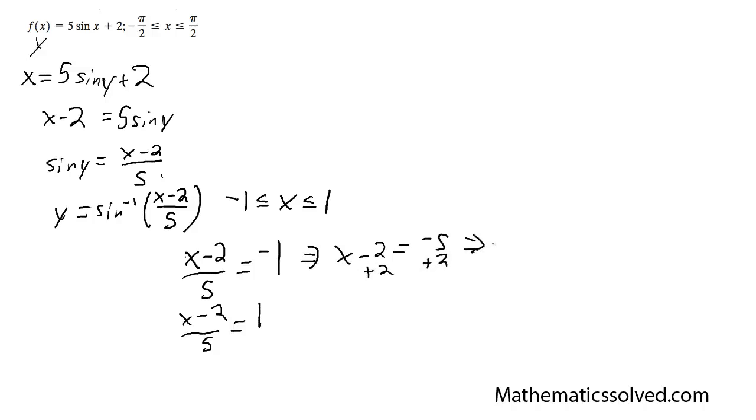Over here times 5 I get x minus 2 is equal to 5, plus 2 and I get x is equal to 7. So this determines what values I can put in for x to make sure I stay within my bounds.